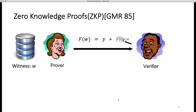First of all, as the title contains zero-knowledge proofs, what is a zero-knowledge proof? That means we have a prover and a verifier. The prover wants to convince the verifier the computation of a function f on w equals to y without leaking the information of w. Here w is a witness and only private to the prover. After seeing the proof pi and the output y, the verifier checks the proof and decides to accept or reject.